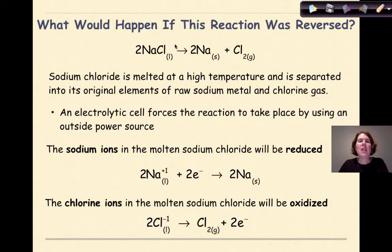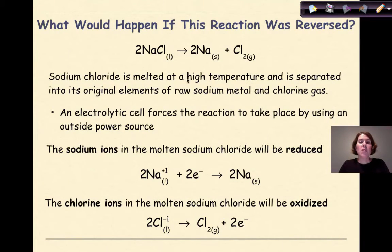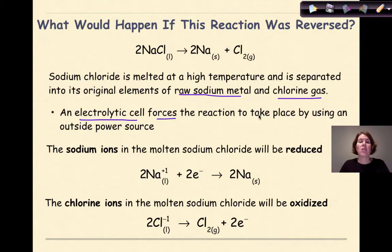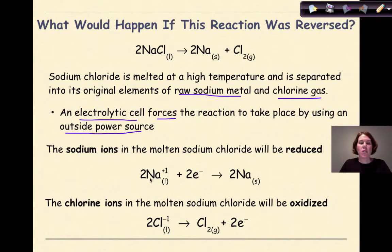But now, what would happen if this reaction was reversed? In other words, let's take sodium chloride as a liquid — we're going to melt it — and form solid sodium and go back to chlorine gas. Sodium chloride is melted at really high temperatures and separated into its original elements of raw sodium metal and chlorine gas. An electrolytic cell forces the reaction to take place by using an outside power source. The sodium ions in the molten sodium chloride will be reduced. We're running it backwards.